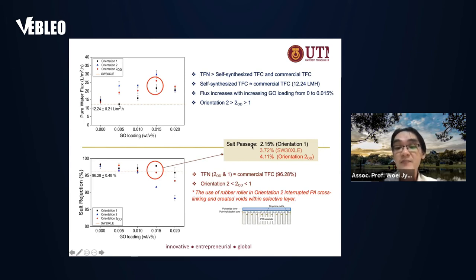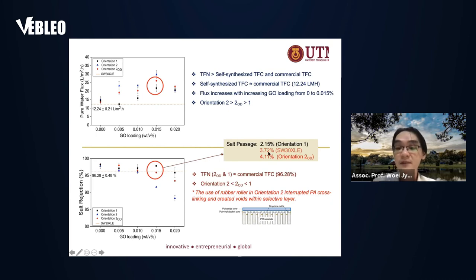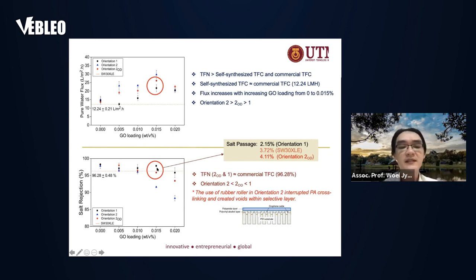When the salt passage is low, it means you can produce much better permeate water quality. If you compare the orientation 1 membrane with a commercial SW30XLE membrane, the water quality produced is about 40% better. In terms of rejection, you don't see a very large difference because it may be only 1 to 2% difference, but the salt passage comparison reveals a significant improvement.